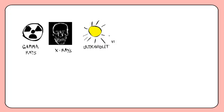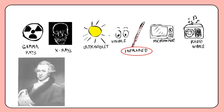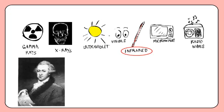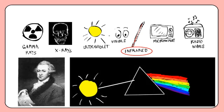Infrared radiation is part of the electromagnetic spectrum. It was discovered by William Herschel, who found that when he separated light from the sun into its different colours, beyond the red colour visible to the eye, there was some other radiation that caused the temperature to rise.